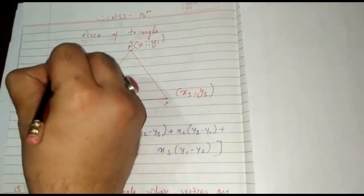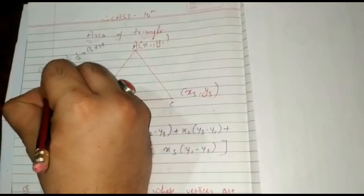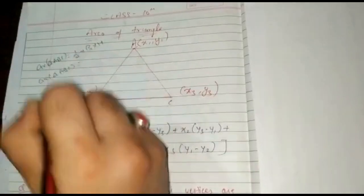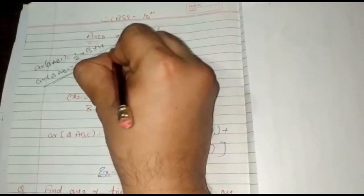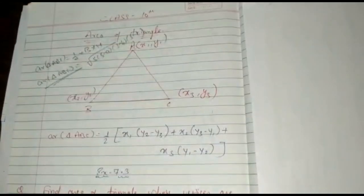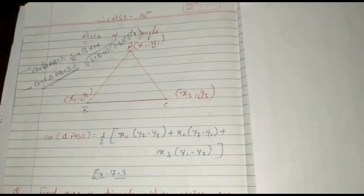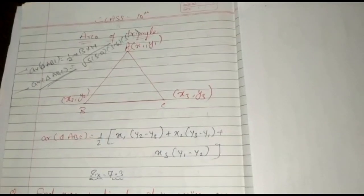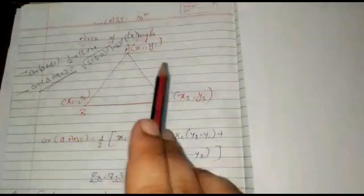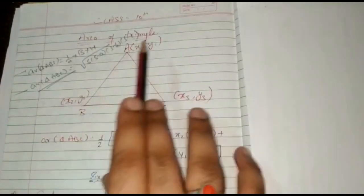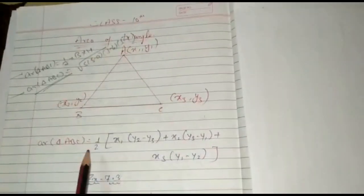In our previous class, that is class 9th, we discussed area of triangle ABC is equal to half times base times height. We also discussed Heron's formula: area equals the square root of s(s−a)(s−b)(s−c). With both these formulas we were not dealing with vertices or coordinates. Here we are discussing coordinates, so each and every point has some coordinate. To find the area of a triangle having coordinates, the formula is: half times x1(y2 − y3) plus x2(y3 − y1) plus x3(y1 − y2).